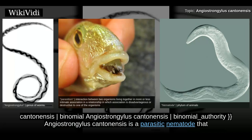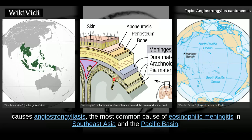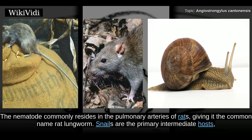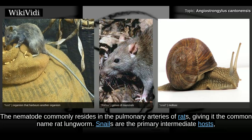Angiostrongylus cantonensis is a parasitic nematode that causes angiostrongyliasis, the most common cause of eosinophilic meningitis in Southeast Asia and the Pacific Basin. The nematode commonly resides in the pulmonary arteries of rats, giving it the common name rat lungworm.